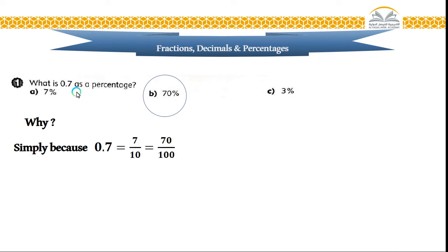Some of you say, why? Simply because 0.7 equals, if I want to change it to fraction, 7 over 10. Now I have 7 over 10. I need to change it to find which percent corresponds to 7 over 10. So I need to find the equivalent fraction of 7 tenths. Simply, I will use multiplication or division only.